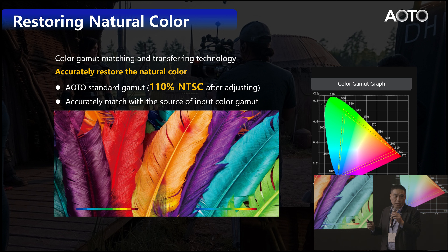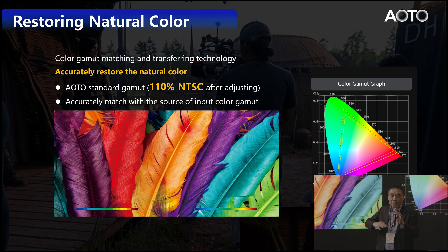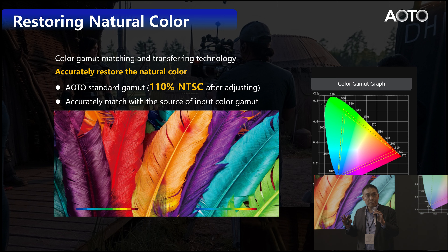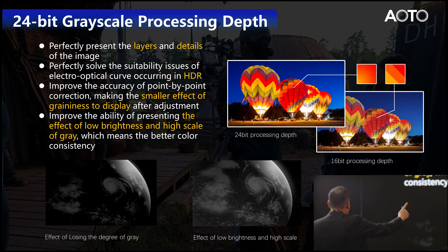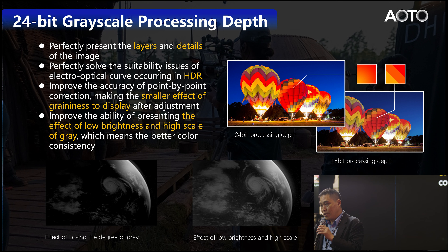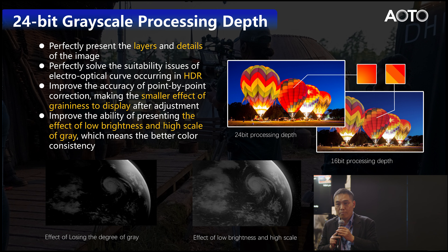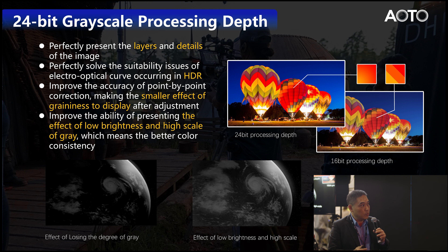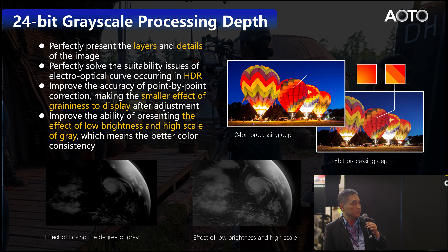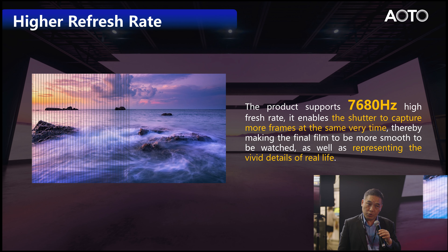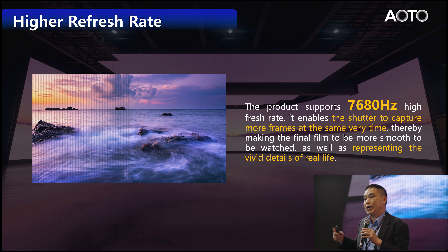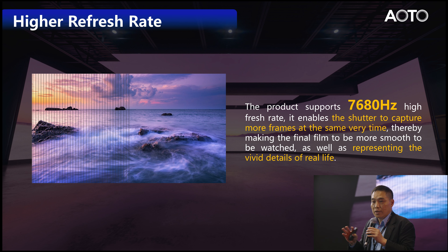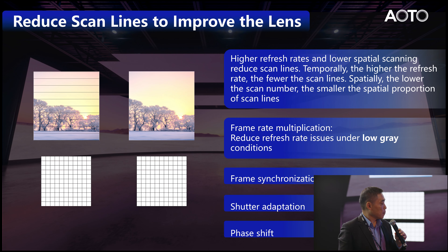We can achieve BT.2020 coverage of 80–84%. With new technology I will introduce later, we can achieve 94%. For NTSC, we can achieve more than 110%. So the color gamut of the screen is fairly wide — the bigger the gamut, the better the color reproduction. We also use 24-bit technique combined with a good Brompton system to achieve greater color depth and a very smooth gray-level transition.